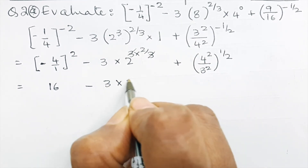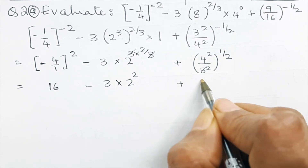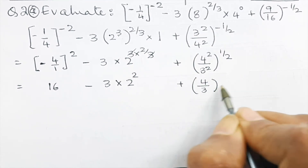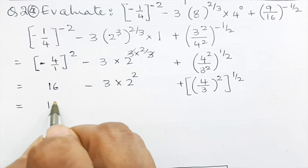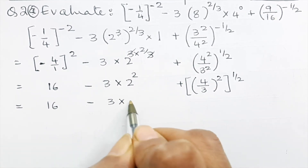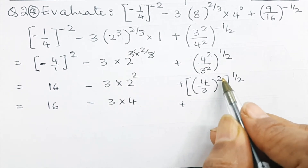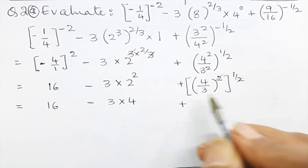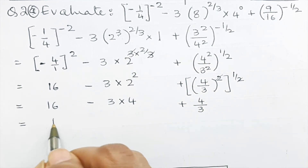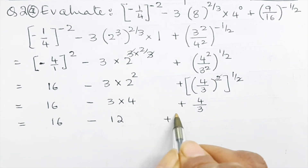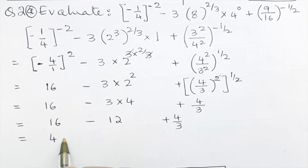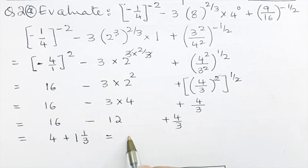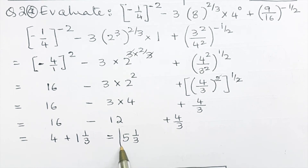Continuing: we have 16 − 12 + 4/3. That gives us 4 + 4/3, which equals 4 and 1/3, and that is our final answer for Question 2a.